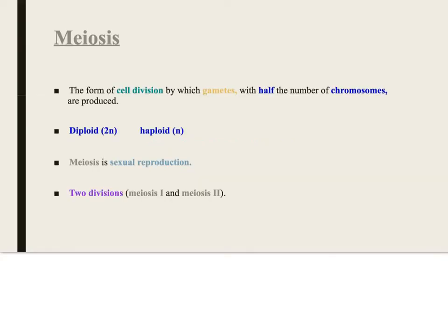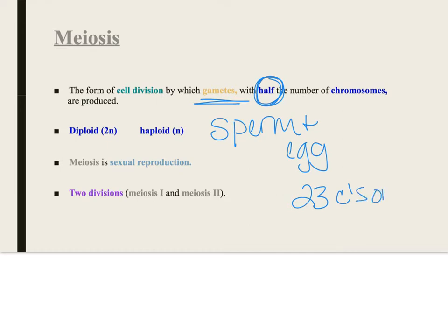So what is meiosis? Hopefully this is a review for you. It's a form of cell division where you got your gametes - sperm and egg, right? So you've got your sperm and egg cell and they have half the number of chromosomes. So for humans that's 23. Diploid is going to be 46 chromosomes, haploid is 23 chromosomes.